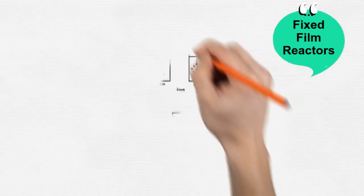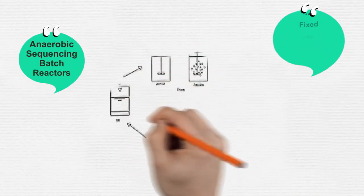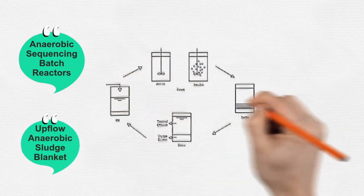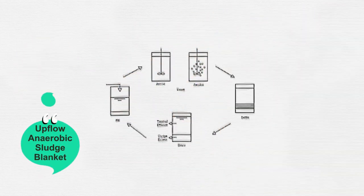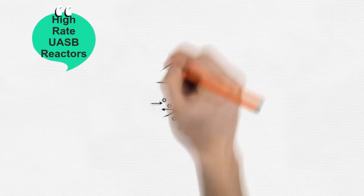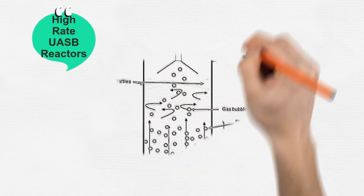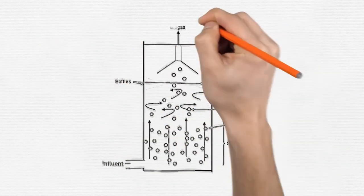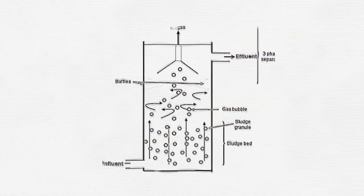Digesters such as fixed film reactors, the anaerobic sequencing batch reactor (ASBR), and upflow anaerobic sludge blanket (UASB) types are reported to work well with dilute hog manure. High-rate UASB reactors with hydraulic retention times as short as two hours can reportedly be used for anaerobic digestion of particle-rich supernatant from cow and pig manure.